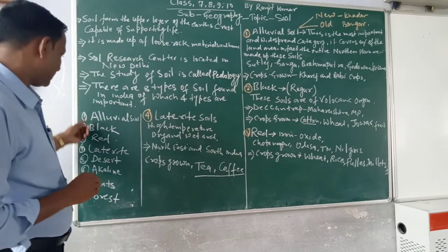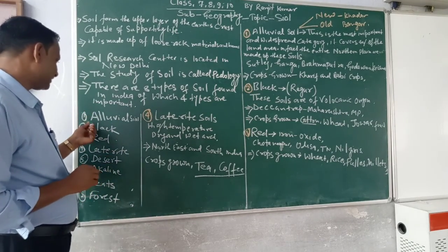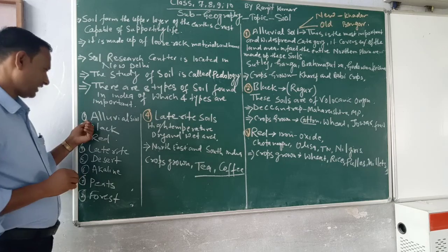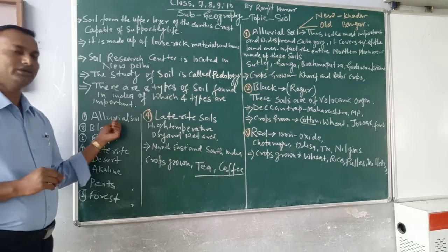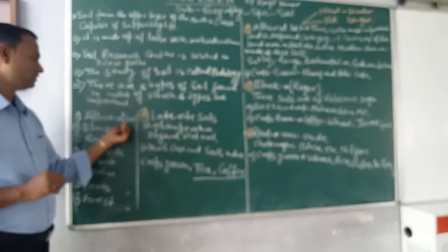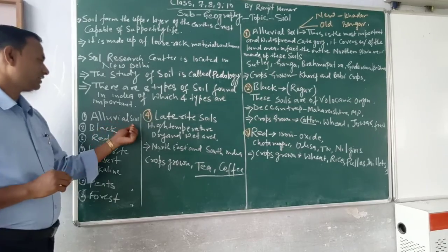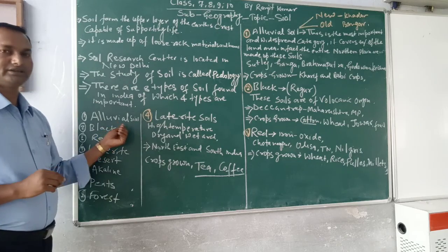First, I will discuss the types of soil. The first type is Alluvial soil. Alluvial soil is called Jalot Mitti in Hindi.